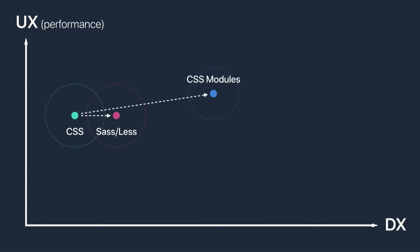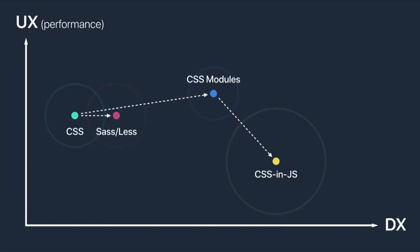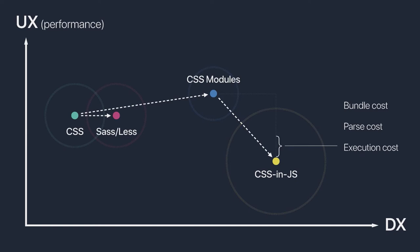Now we have CSS Modules — a huge developer experience win. We get style isolation by default and a really performant mechanism for composing styles together, giving us a bit of a performance increase as well. Now we have CSS-in-JavaScript, which further improves developer experience. We have awesome abstractions like Styled Components and all the benefits of doing things in a single language, but these benefits come at the expense of performance — through bundle cost over the wire, parse and compile cost at startup, and execution cost at runtime.